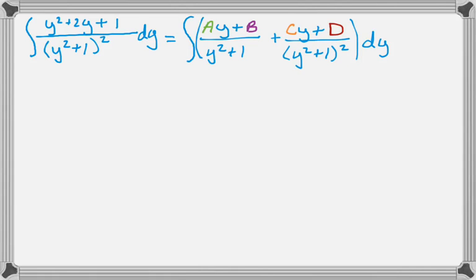So I put a generic linear function over y squared plus 1 to the first power, and a different generic over y squared plus 1 to the second power, so now I have to solve for A, B, C, and D.